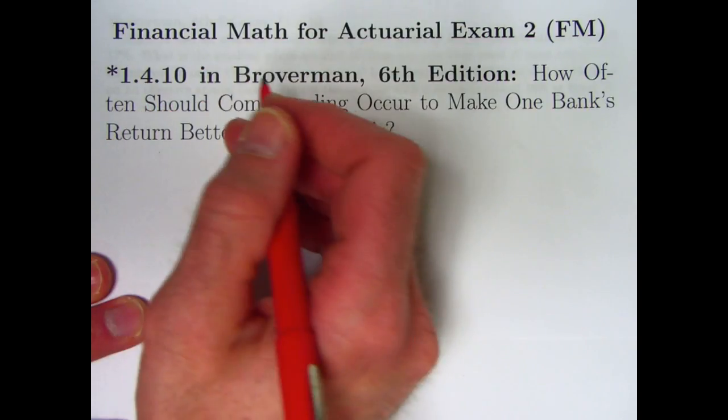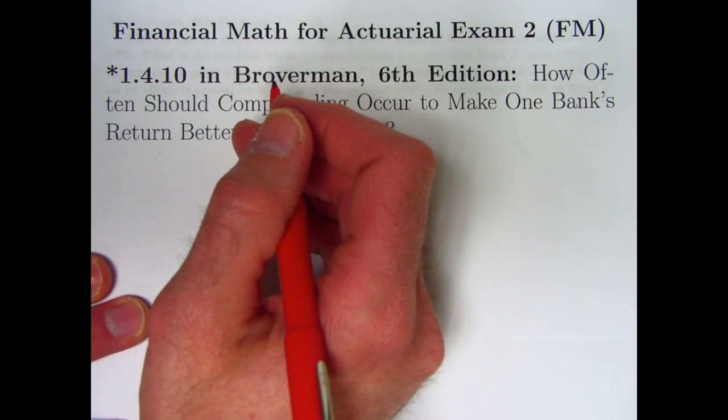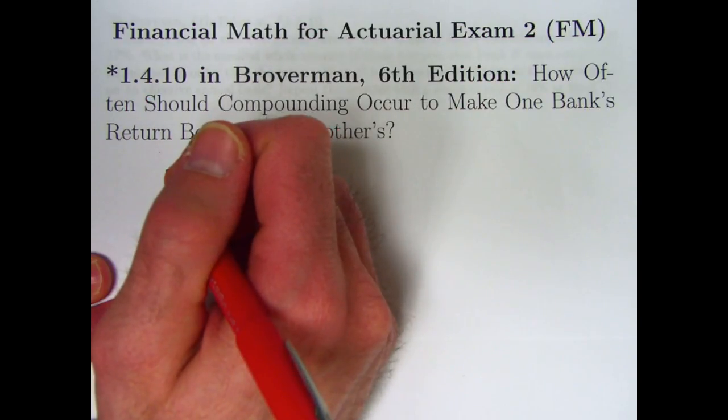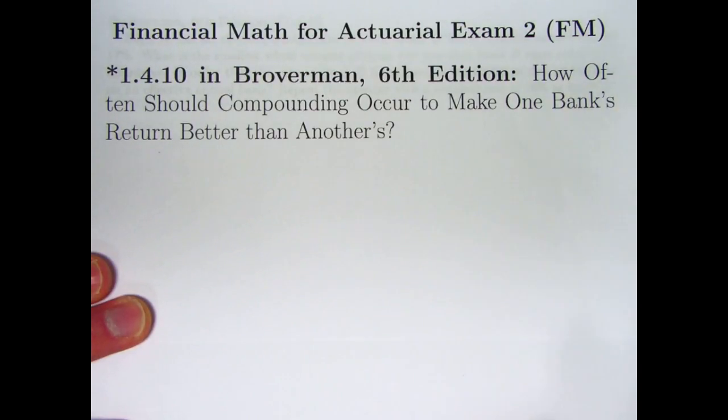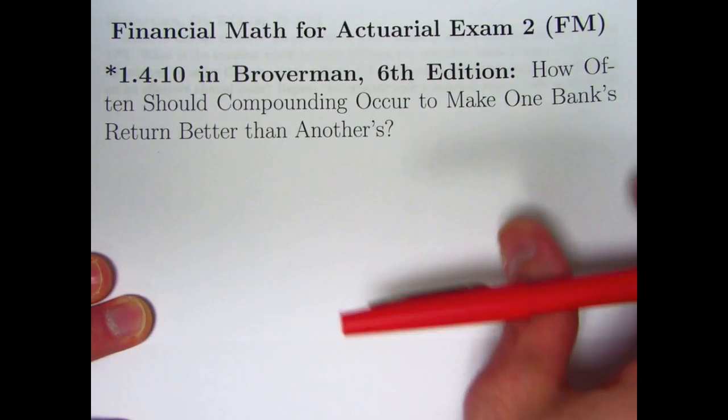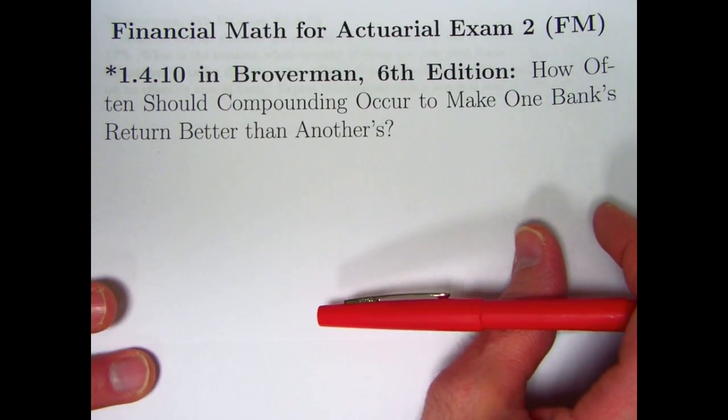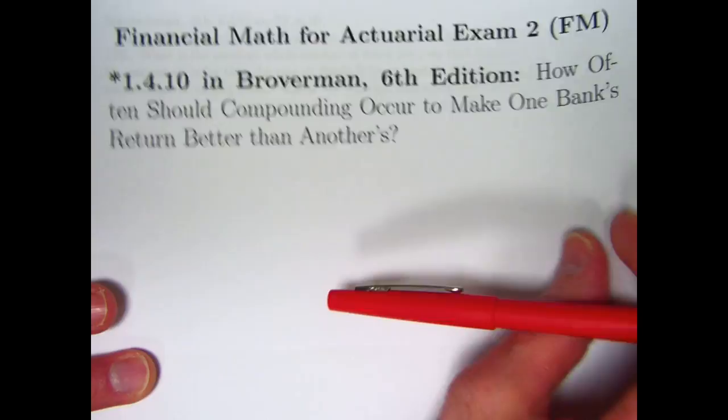It is actually related to my last video. In video number 10, we looked at problem 1.4.9. That was a pretty theoretical question. At the very end of that video, we looked at what happens with continuous compounding, and the second part of the question in this one is going to be related to that, though this is going to be an easier problem. I'm not really quite sure why it's a starred problem.